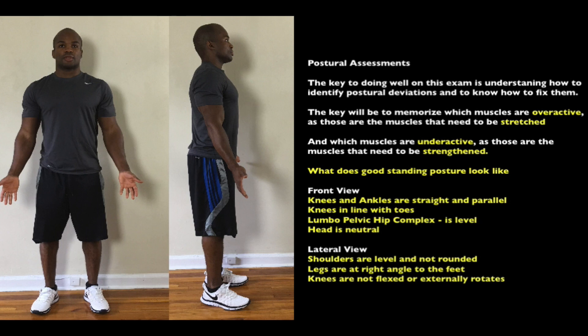Let's start with a postural assessment. What should proper posture look like? From the front view, the checkpoints are: feet straight and parallel, knees in line with the toes, the lumbo-pelvic hip complex leveled in the front and back, shoulders not rounded or tilted, and the head neutral. From the side view, feet are in neutral position, legs at a right angle to the feet, and knees are not flexed or turned out.